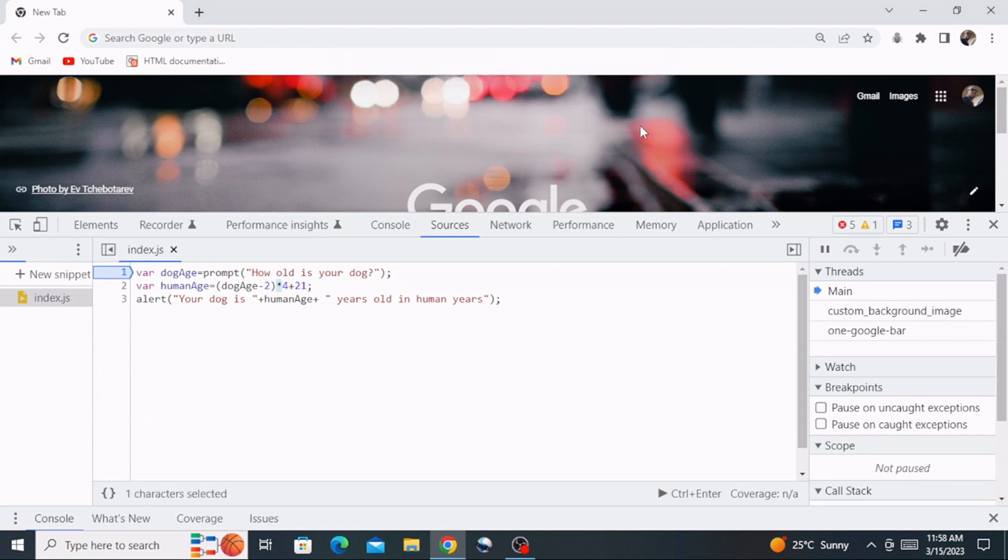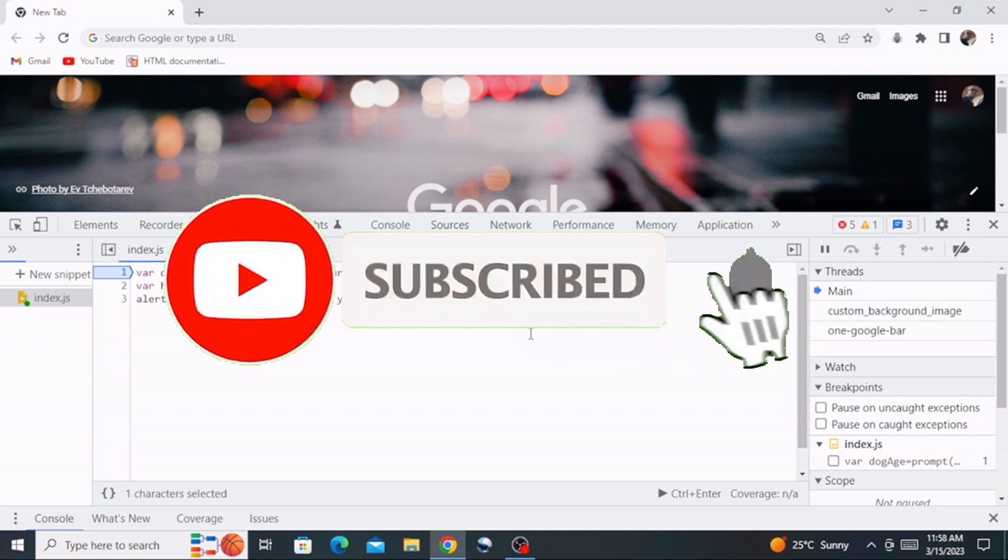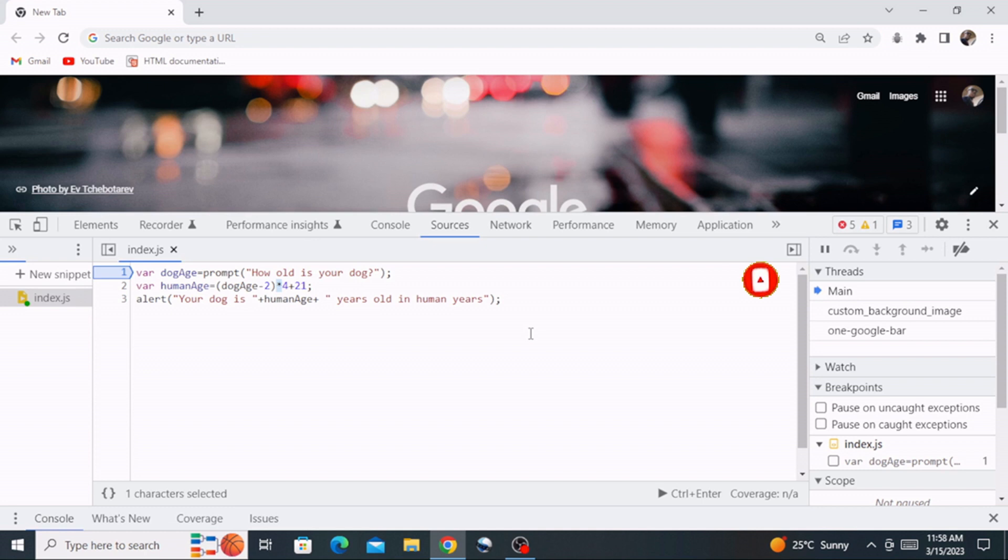So this is how you'll create that dog age in human years converter or calculator. And with that we have come to the end of our discussion of JavaScript arithmetic focusing on the modulus operator. Thanks for watching and bye for now.